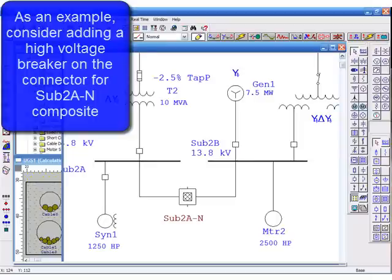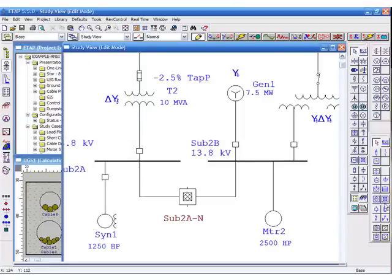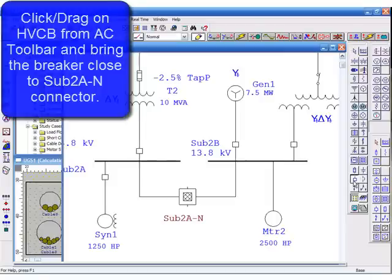As an example, consider adding a high voltage breaker on the connector for the sub 2A-N composite network. Click or drag on the high voltage circuit breaker from the AC toolbar and bring the breaker close to the composite network connector.